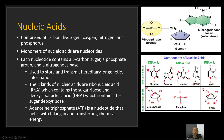Last but certainly not least are our nucleic acids. Nucleic acids are comprised of carbon, hydrogen, oxygen, nitrogen, and phosphorus. The monomers of nucleic acids are nucleotides, and each nucleotide contains a five-carbon sugar, a phosphate group, and a nitrogenous base. Here's an example of a nucleotide — here's the phosphate group, the five-carbon sugar, and then the nitrogenous base in the form of adenine.